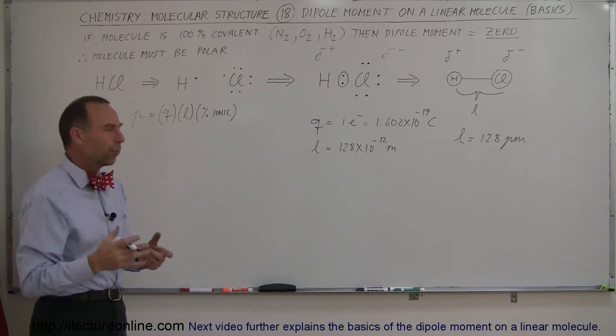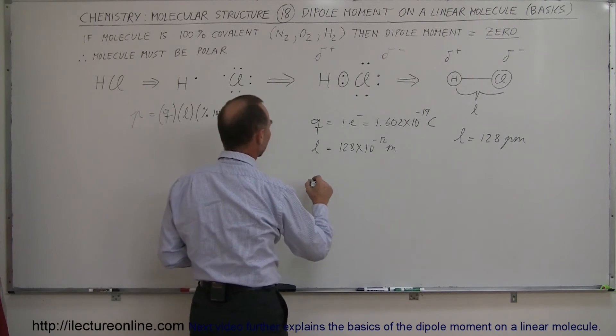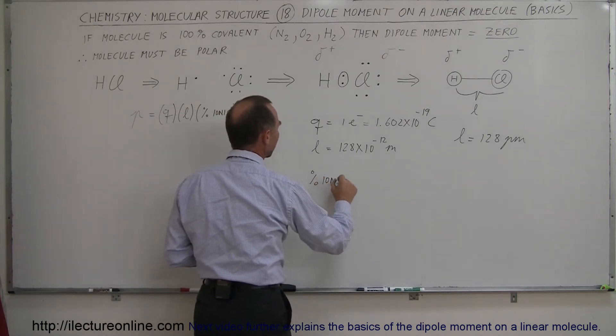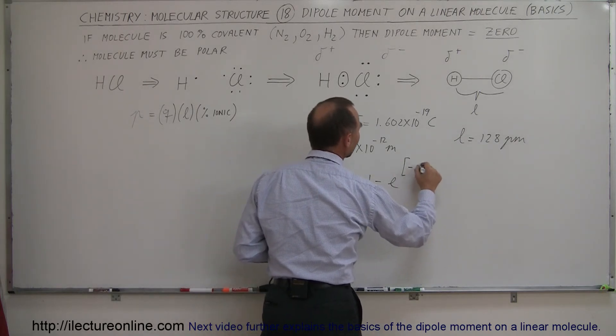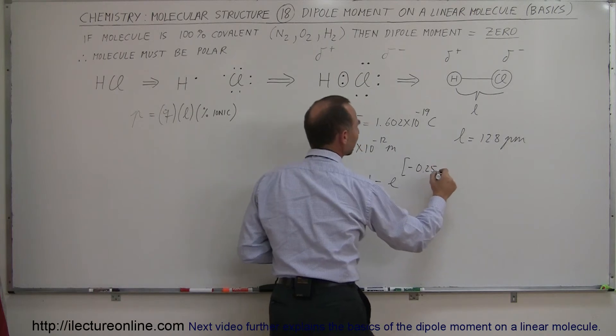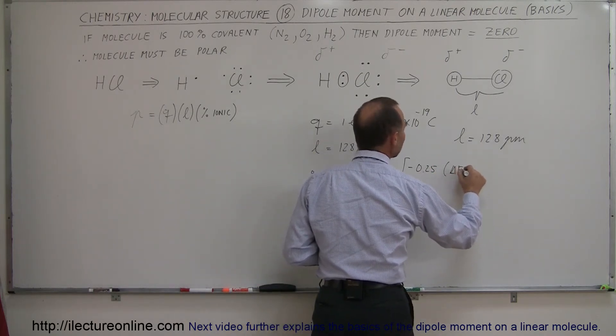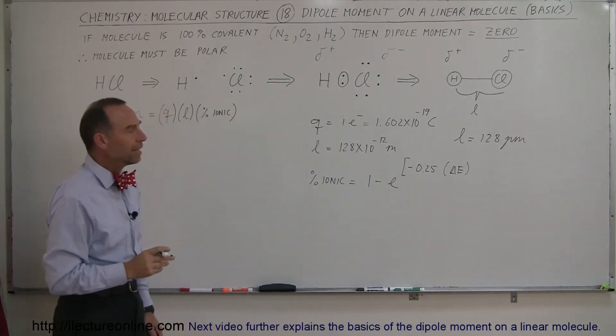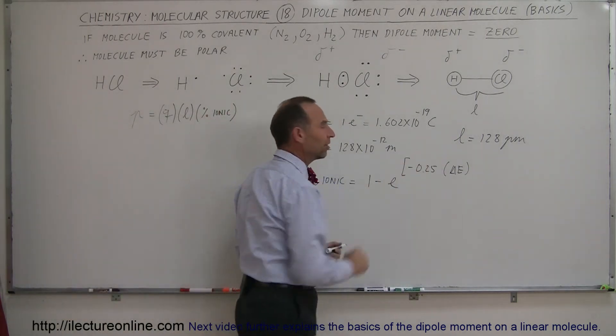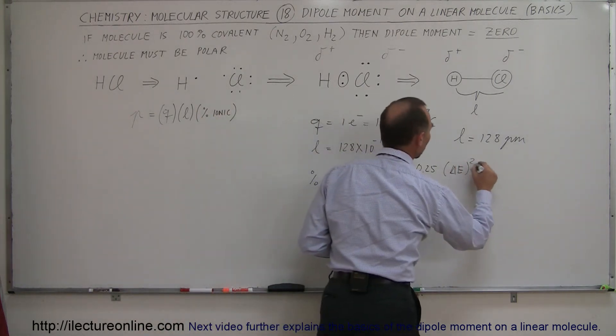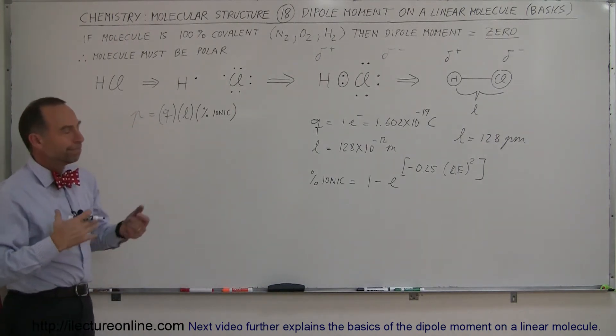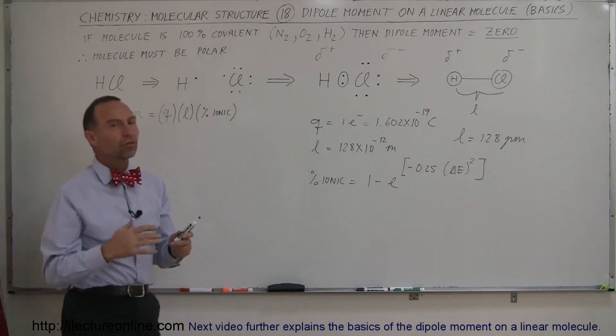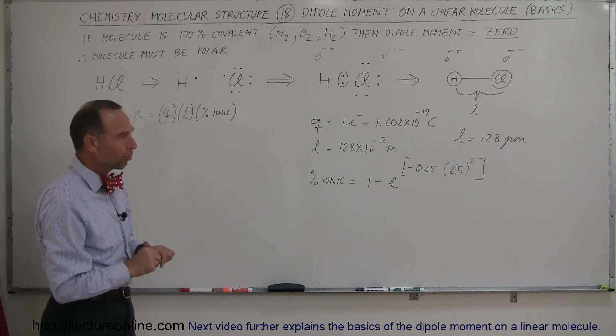And the way to do that, there's different ways, but there's a general formula we can use. We can say that the percent ionic bond is equal to 1 minus E raised to the minus 0.25 times the difference in the electronegativity quantity squared. Now that's not an exact formula. It's a relative equation that gives us something that's fairly close to the true number that we're looking for. There's no absolutes in this particular case, and that will get us pretty close.